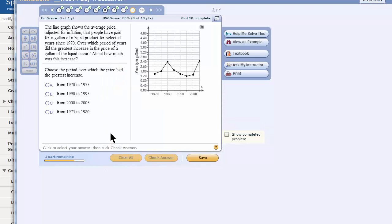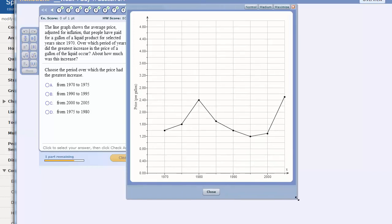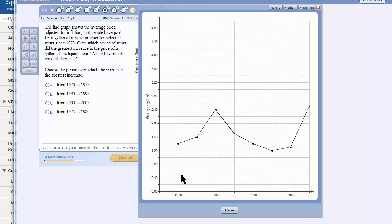The line graph shows the average price adjusted for inflation. Let me make it much bigger. This is called a line graph. This is how what we're doing is used in real life. The line graph shows the average price adjusted for inflation that people have paid for a gallon of a liquid product for selected years from 1970 to 2010. Over which period of years did the greatest increase in the price of a gallon of liquid occur? And about how much was the increase?